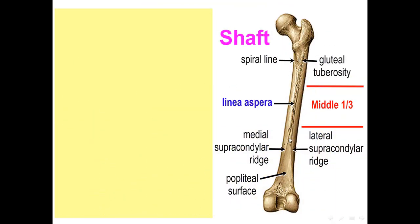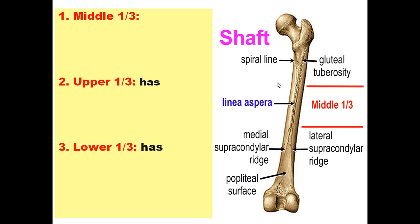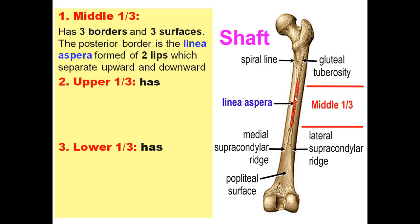The shaft is divided into three thirds: upper, middle, and lower. The middle third is triangular in cross section and has three borders and three surfaces. The posterior border is called the linea aspera, which has two lips. The two lips separate superiorly and inferiorly. The medial lip is continuous superiorly with the spiral line and inferiorly with the medial supracondylar ridge. The lateral lip is continuous superiorly with the gluteal tuberosity and inferiorly with the lateral supracondylar ridge.